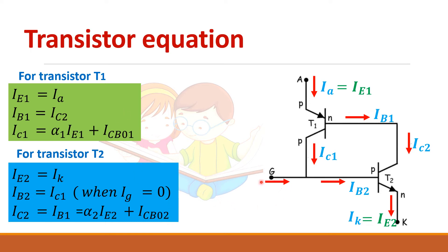So when you give IG gate current, so this base current will be equal to this IG plus IC1. So this equation is valid only when IG is equal to 0. When you apply IG, IBT is equal to IC1 plus IG.